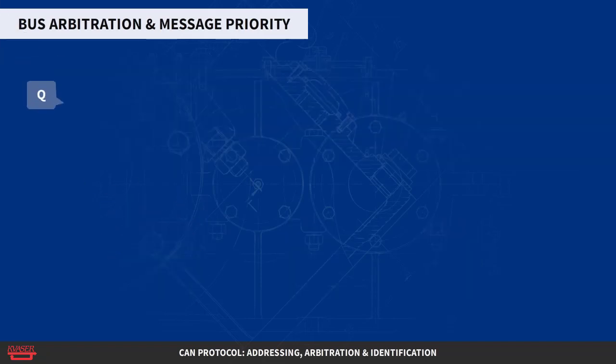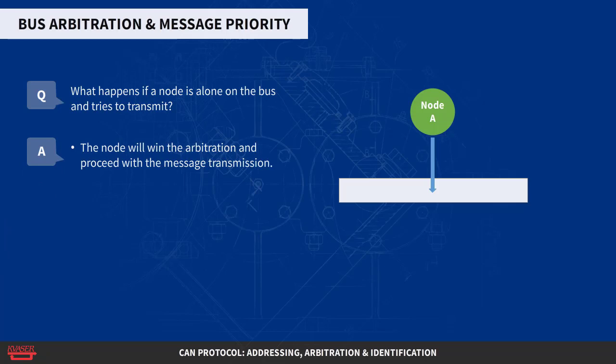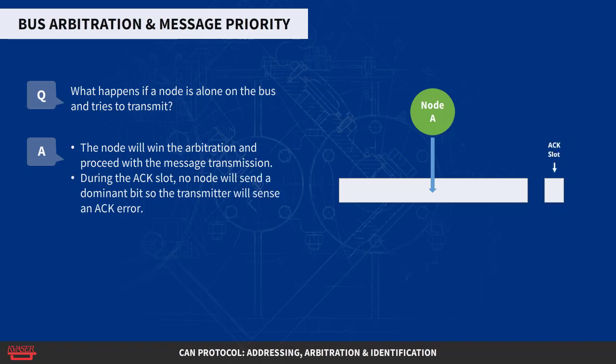Question: What happens if a node is alone on the bus and tries to transmit? Answer: The node will, of course, win the arbitration and happily proceed with the message transmission. But when the time comes for acknowledging, no node will send a dominant bit during the ACK slot.